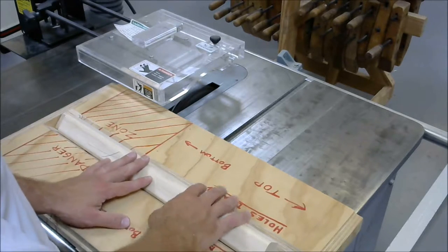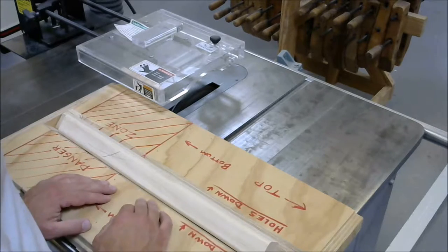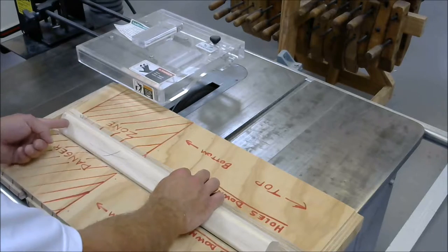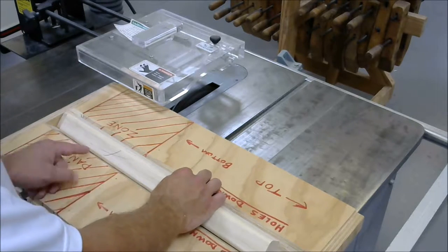A couple other things you need to know if you're gonna make a cut with this jig. Number one, you need to stay tight to this block on the end, otherwise the pattern will be cut in different locations on the legs.